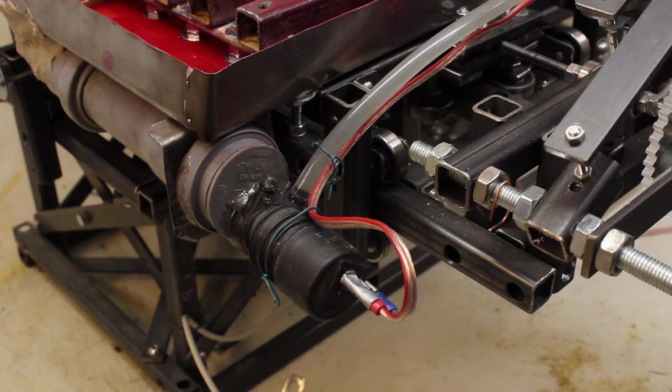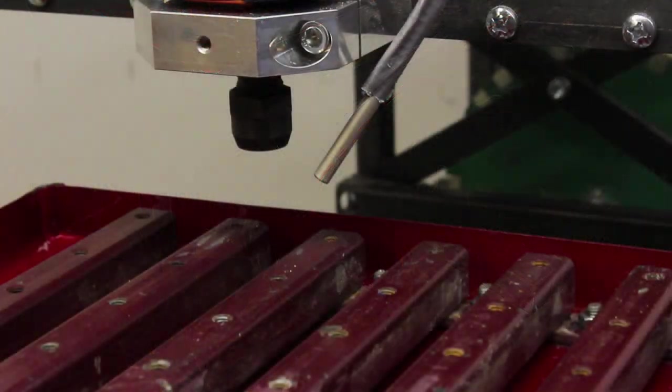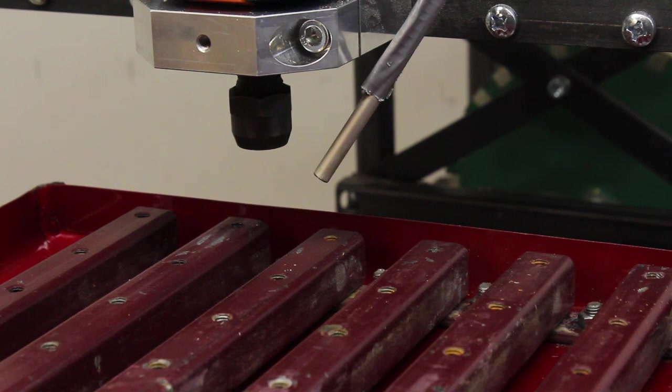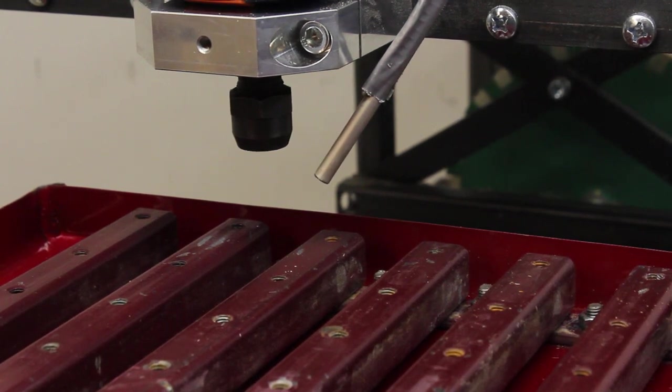The pump is from the windscreen washer system of a car. Through a rubber hose and an aluminum tube, the water flows to the spindle motor.